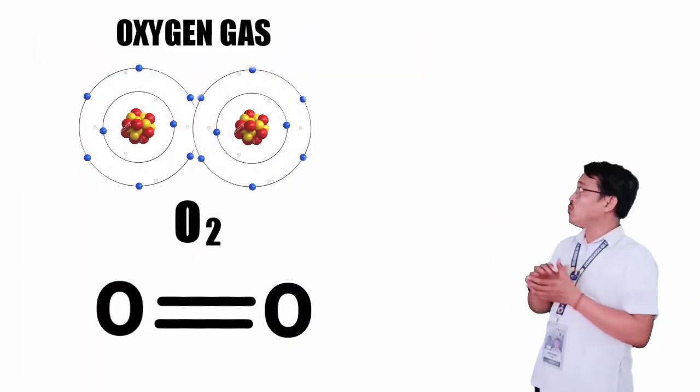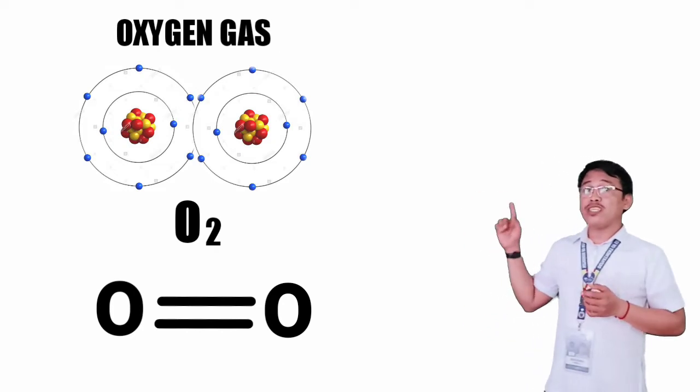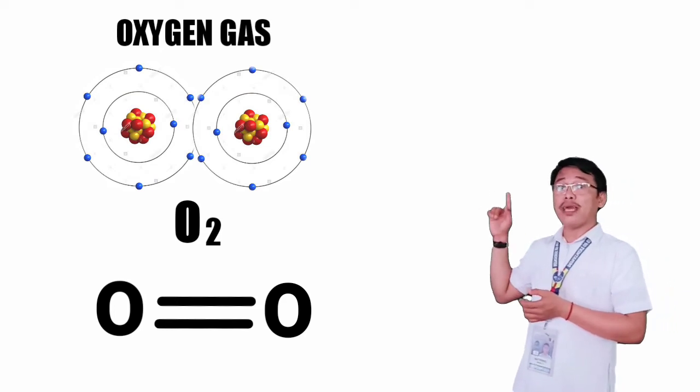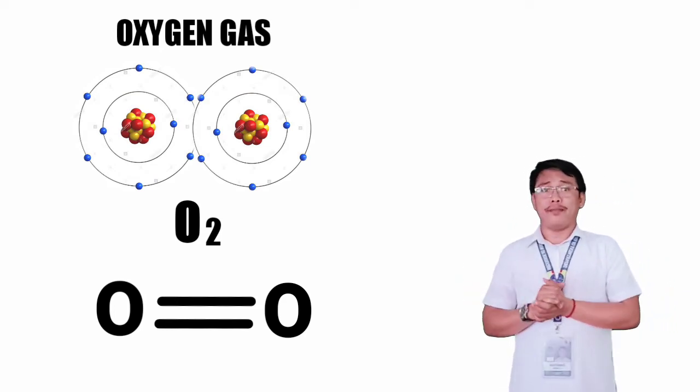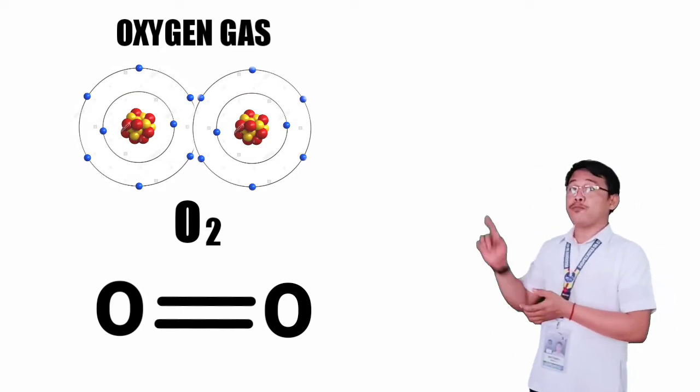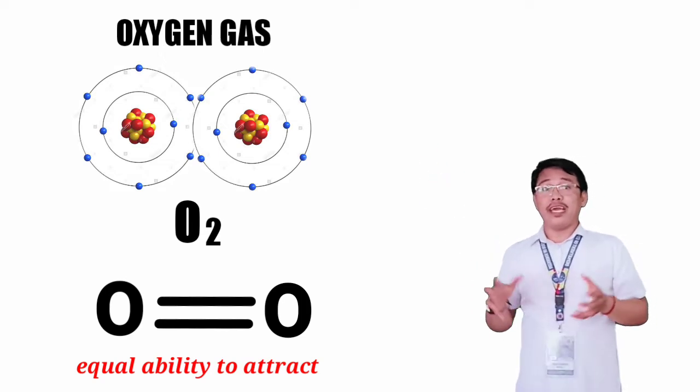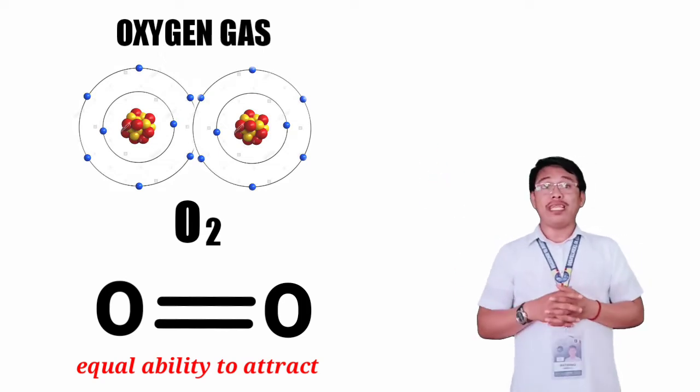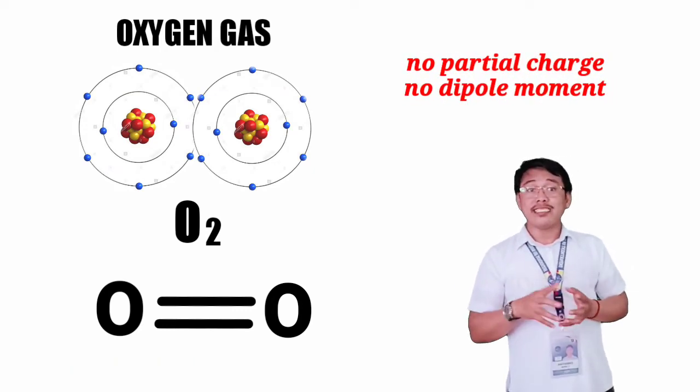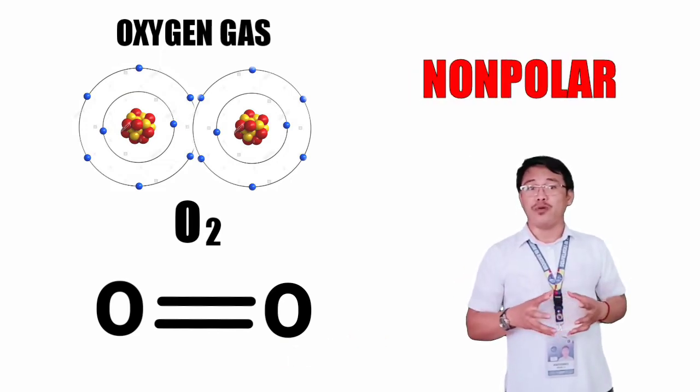Let's have oxygen gas O2 as an example. As we discussed earlier, oxygen has six valence electrons. So when two oxygen atoms with the same electronegativity combine, what will happen? As you can see, the electron density is spread evenly between the two atoms in the bond. Since a pair of electrons is shared equally between atoms, there is no partial charge created. Hence, no dipole moment. Therefore, oxygen gas is a non-polar molecule.